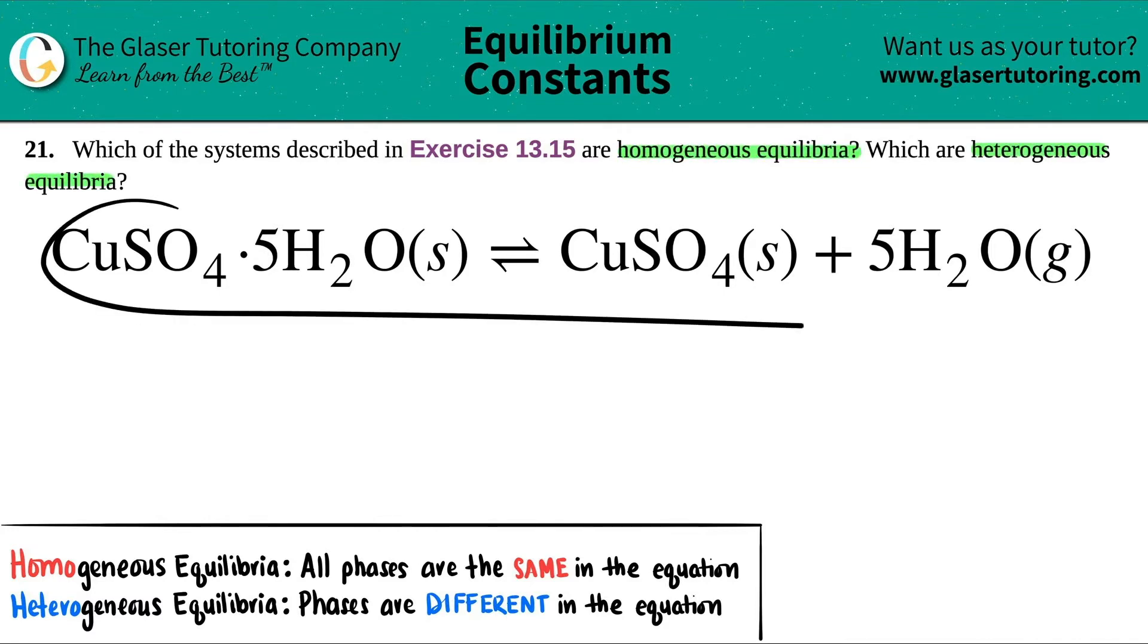Okay, so I pulled up one example in that exercise list. In this case, we have to find out if CuSO4·5H2O, which comes to equilibrium with CuSO4 solid plus 5H2O gas, if this is either homogeneous or heterogeneous.